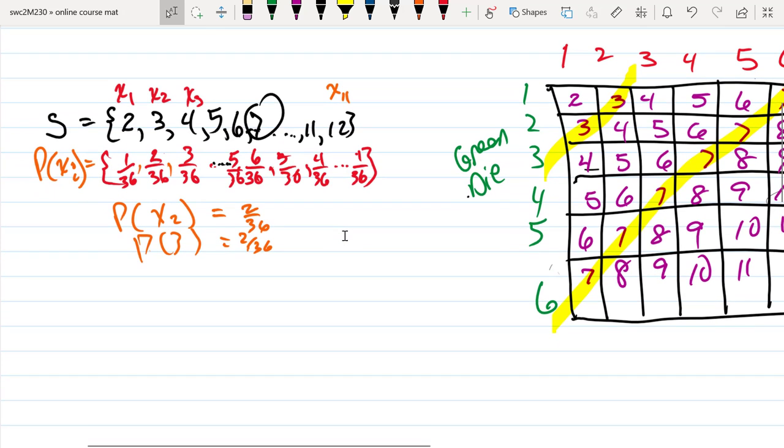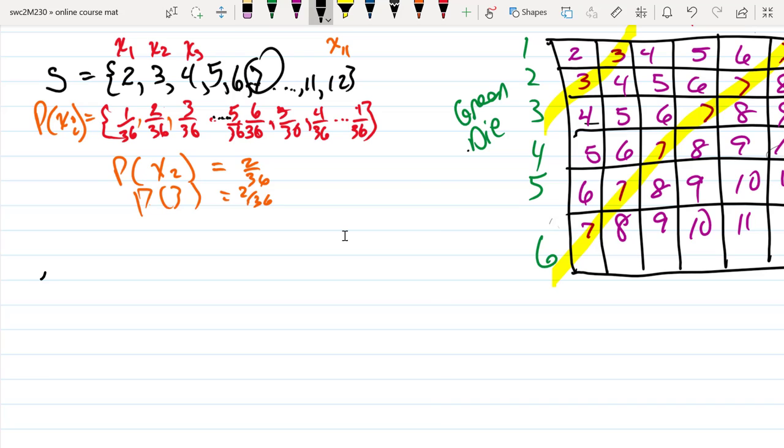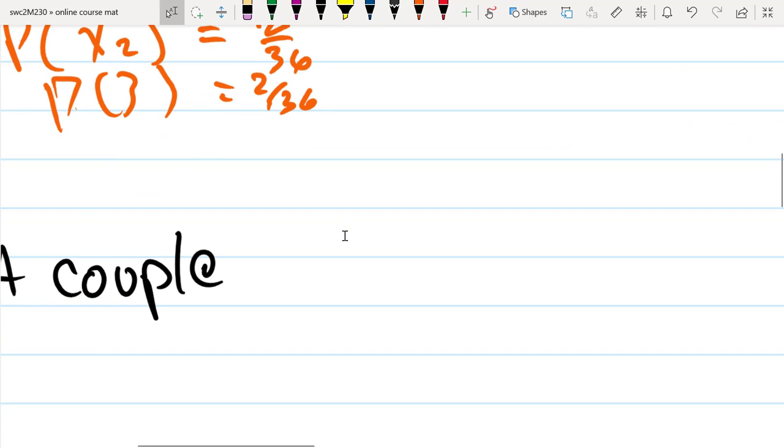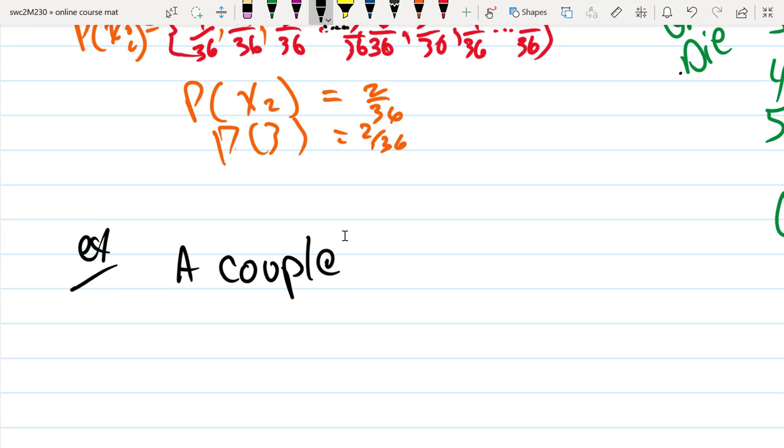A more traditional setup for probability distribution is you have a set of values that a random variable can take. Let's say a couple is going to have five kids.